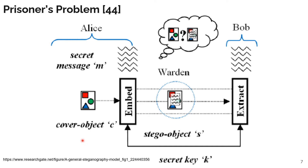So what Alice and Bob decide to do is conceal the message into an image or audio and use a secret key K to extract M from their seemingly benign communication. Alice takes a cover object C, such as an image of the Mona Lisa, and embeds M into C using the secret key K, creating what we call a stego object marked S. The stego object has the appearance of our cover image while harboring our message M. S is sent on the channel the warden is listening on, but the warden cannot detect the secret message just by viewing the communication. Bob receives S and is able to extract the secret message using the previously agreed key K. Steganography hinges on the fact that the warden cannot detect our secret message through various embedding techniques.